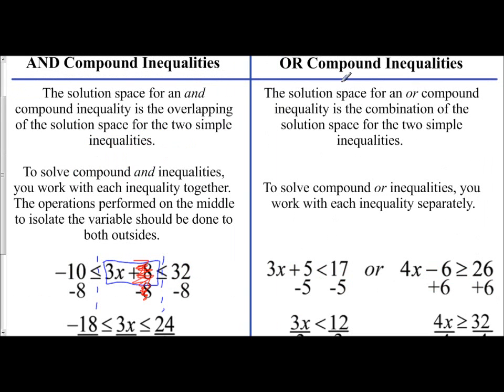Let's scroll back up and look at or compound inequalities. The solution space for an or compound inequality is the combination of the two. It's the first one and the second one together for it. It could be either or. So to solve a compound or inequality, what you want to do is just work with each one separately.